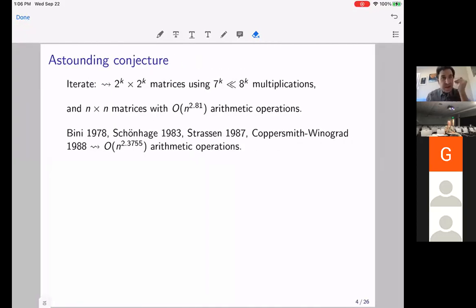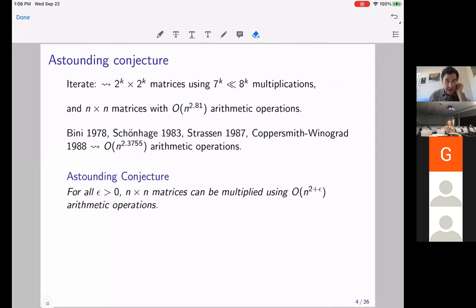And if you keep doing this, you can multiply N by N matrices with, on the order of N to the 2.81, which is log two of seven, arithmetic operations. And of course, once he discovered this, then people said, well, how much better can we do? And then there was a flurry of work over the next 20 years, which made amazing progress. I should point out this progress was not in explicit algorithms, but improving existence of algorithms.